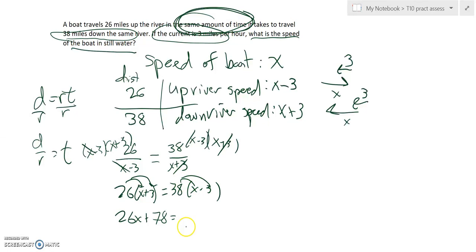And if I distribute that in, I've got a 38X minus, and then if I go 38 times 3, that is going to give me 114. Great. Now I'm going to solve this.